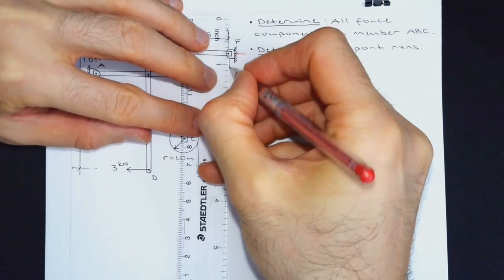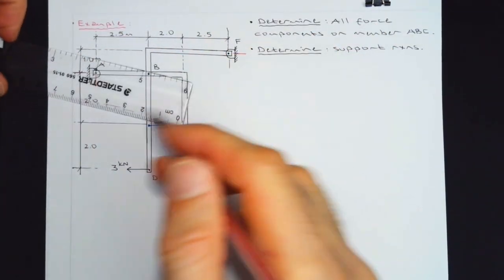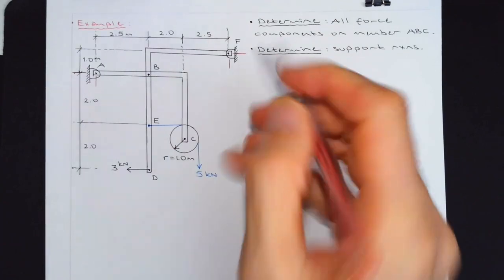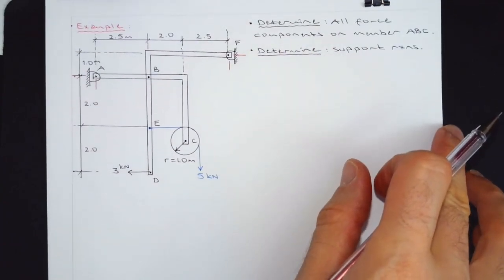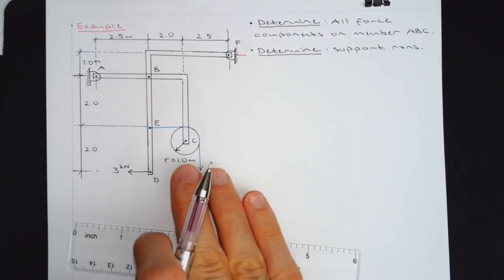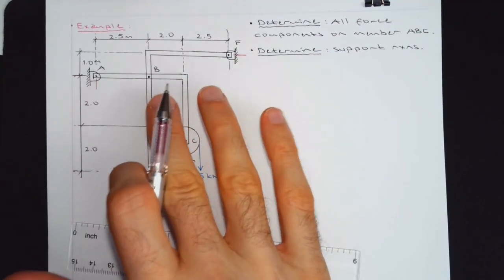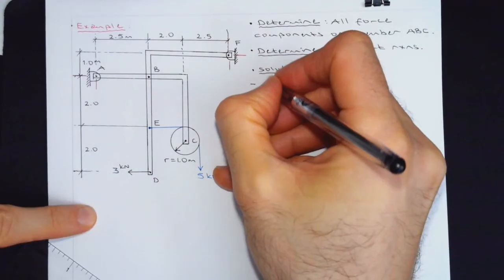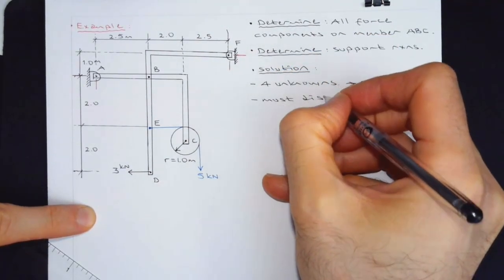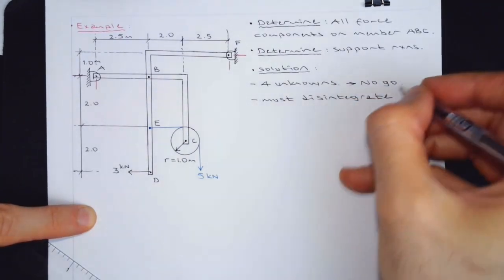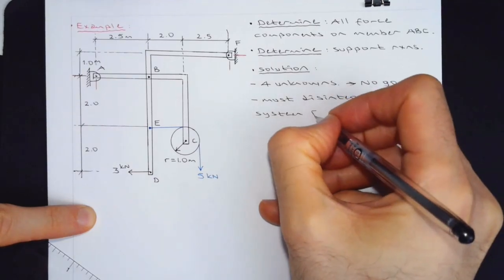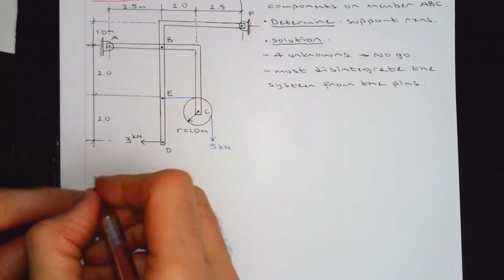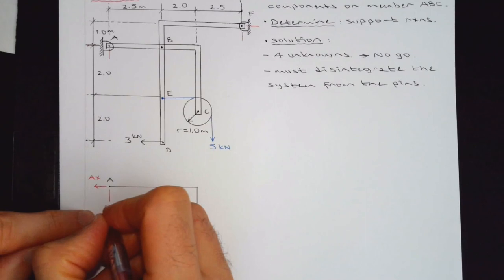Let's talk about how many unknowns do we have. Look at support reactions. Two reactions here. Two here. Supports are not aligned. They are at a different elevation. Meaning that when you take a moment about one of those, two unknowns will show up in that equation. Meaning that you won't be able to find anything from that equation. We cannot proceed with this system. We have to separate it from the pins. We need to look at each part individually and then try to come up with a strategy. Four unknowns, which is must disintegrate or call this disassemble the system. Of course, we do this from the pins. I would like to show unknowns. In terms of directions, you can make assumptions. It doesn't matter. We would figure them out.